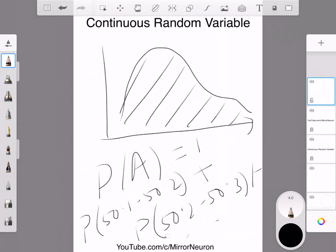Plus whatever be the height, the probability of the height of 50.2 to 50.3, and so on. All this should be equal to one.